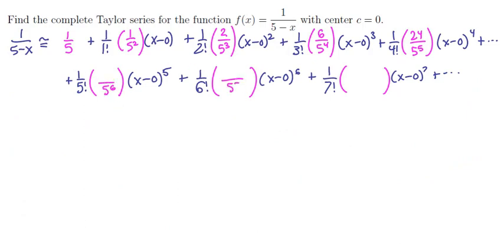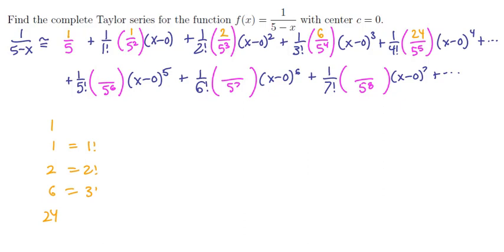The denominators follow a clear pattern: 5 to the 6th, 5 to the 7th, 5 to the 8th. What about the numerators? They are 1, 1, 2, 6, 24 — that's precisely the factorial sequence: 0 factorial, 1 factorial, 2 factorial, 3 factorial, 4 factorial. So the next terms should have 5 factorial, 6 factorial, and 7 factorial in the numerators for the pattern to continue.